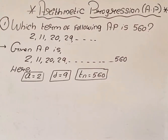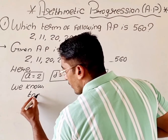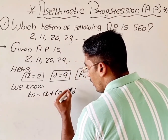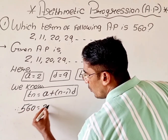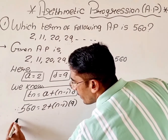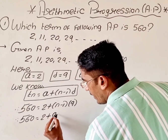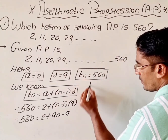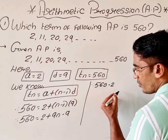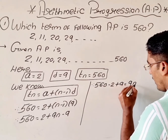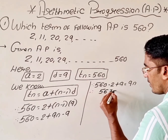We have to find out the value of N. We know T(N) = A + (N−1) × D. Therefore, substituting the values: 560 = 2 + (N−1) × 9, which gives 560 = 2 + 9N − 9. Transferring all numbers to the left-hand side: 560 + 2 will become minus 2, minus 9 will become plus 9, is equal to 9N. So 560 − 2 = 558, and 558 + 9 = 567 = 9N.